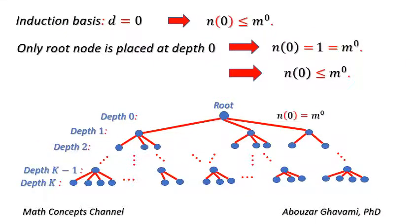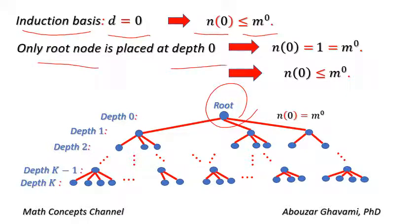Let us prove the induction basis. We show that at depth 0, N(0) is less than or equal to M to the power of 0. There is only one node, the root node, at depth 0. Thus, N(0) equals 1, and 1 equals M to the power of 0. Therefore, we have the equation N(0) is less than or equal to M to the power of 0.